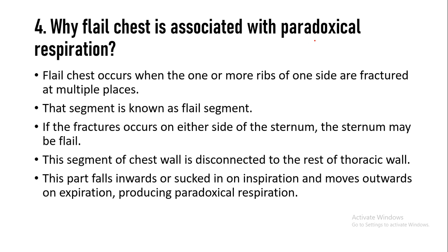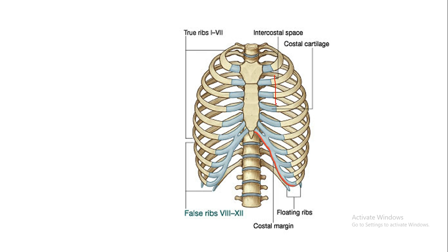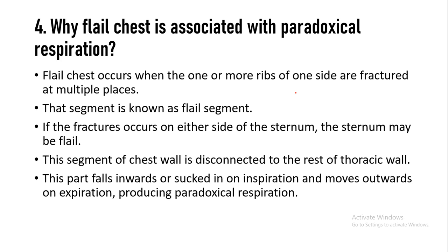The next question is: why is flail chest associated with paradoxical respiration? First, we will see what is meant by flail chest. In this diagram, if one side of the ribs gets fractured at multiple sites — suppose I fracture these ribs on two sides — the area between these two fracture lines becomes the flail segment. The meaning of the flail segment is that this part of the chest wall becomes free. Because it is free from both sides, it will show reverse action with respiratory movement.